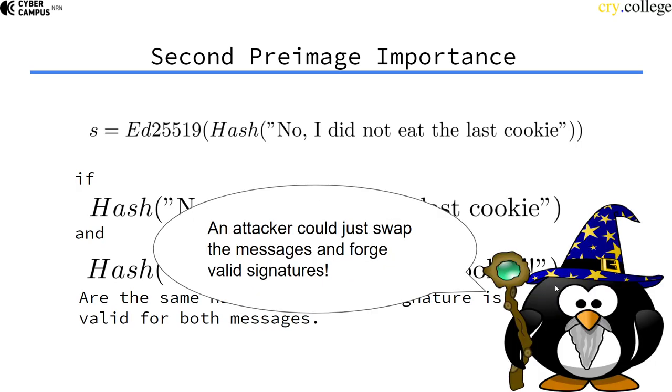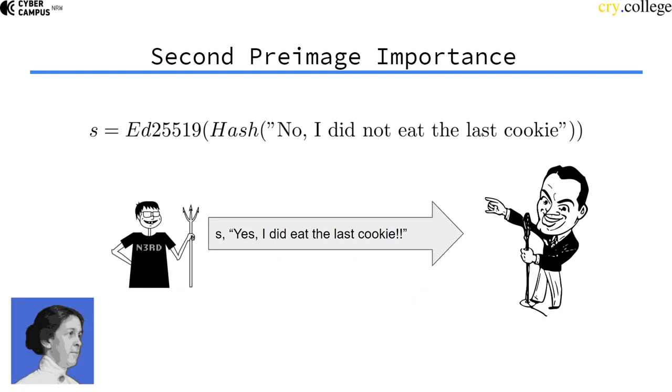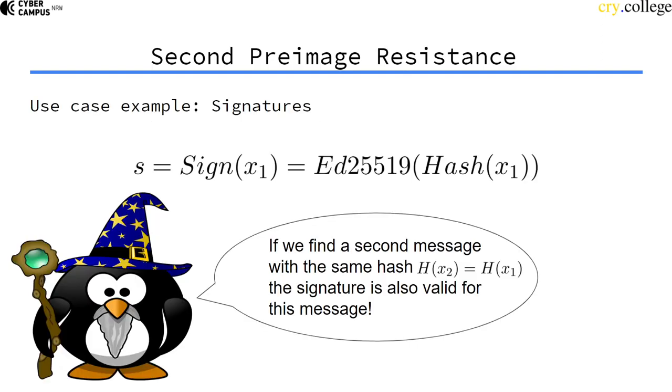An attacker could just forge the signature by using a valid signature and finding a second input to the hash function that has the same hash output as the original message. They would then have valid signatures of messages the private key holder has never signed. So if we find a second message with the same hash, the signature is also valid for this message, which is quite problematic.